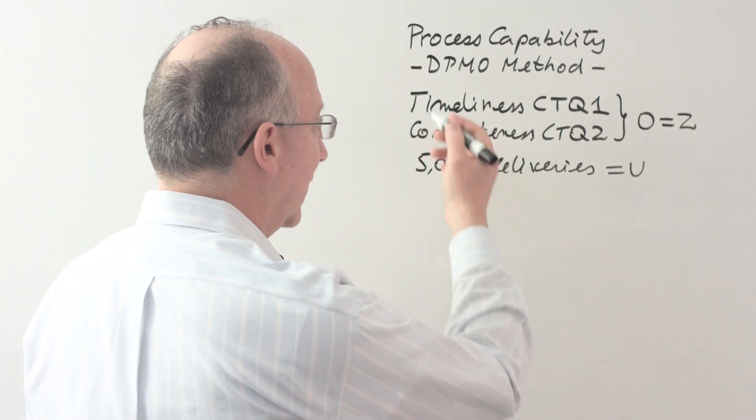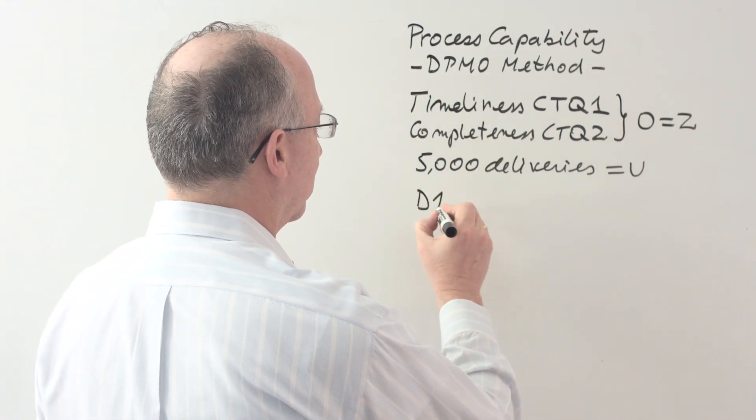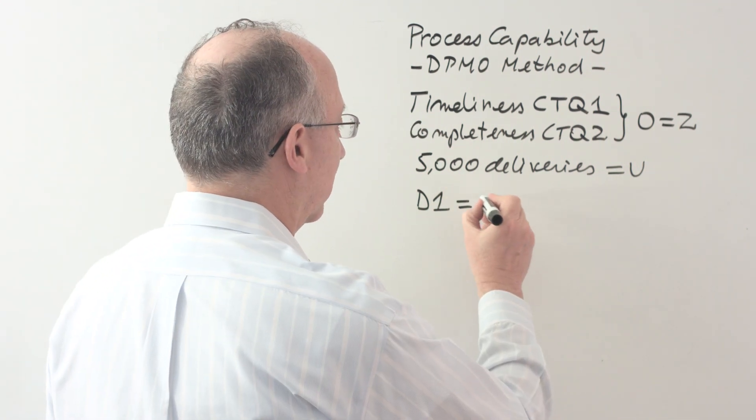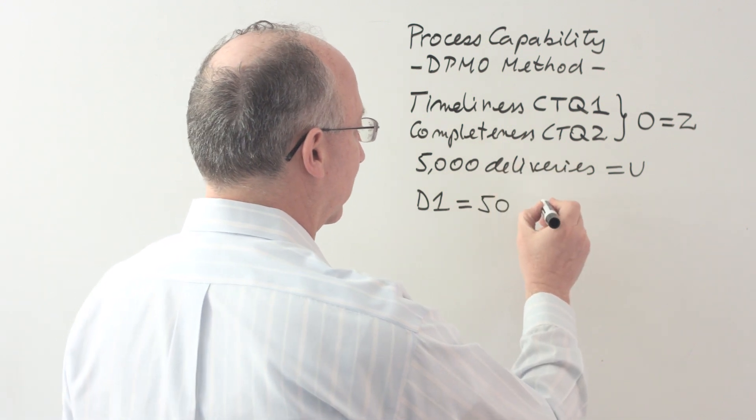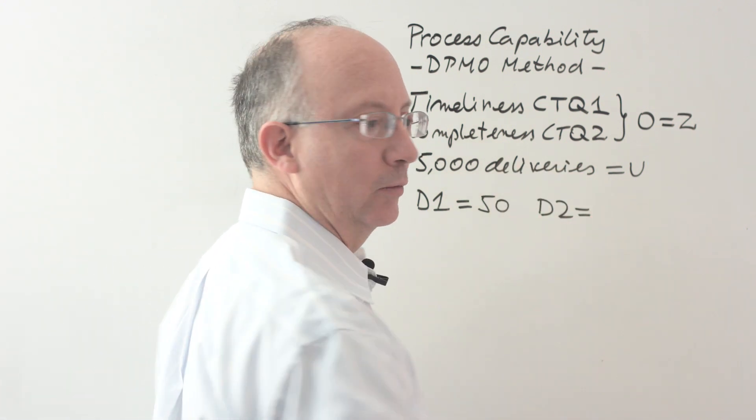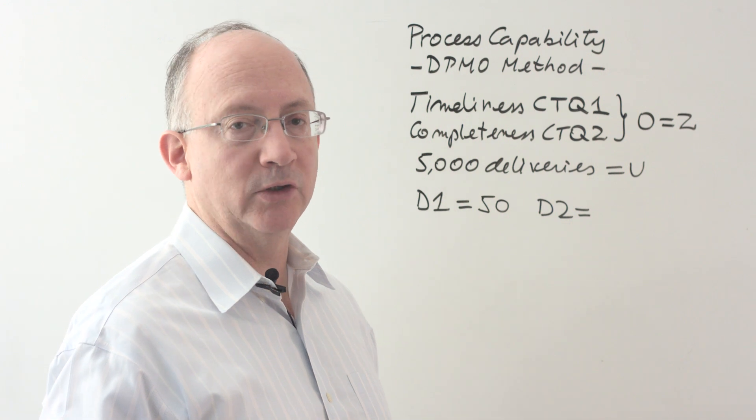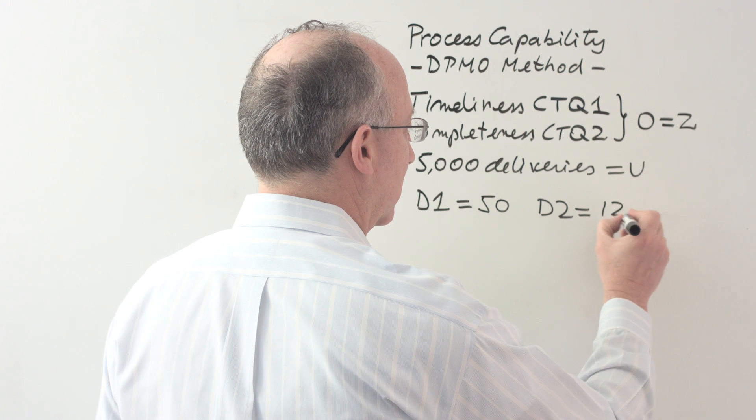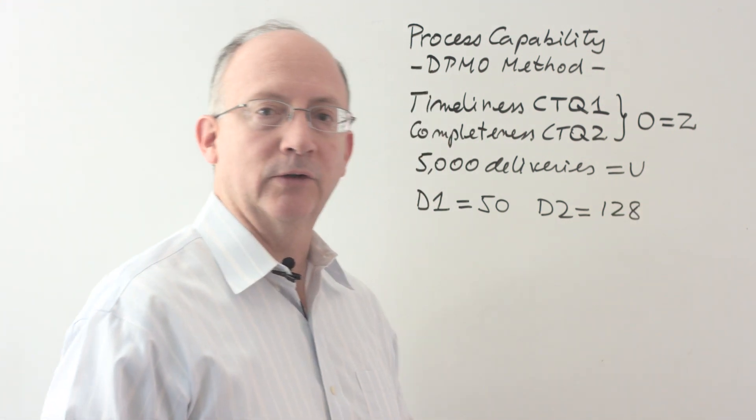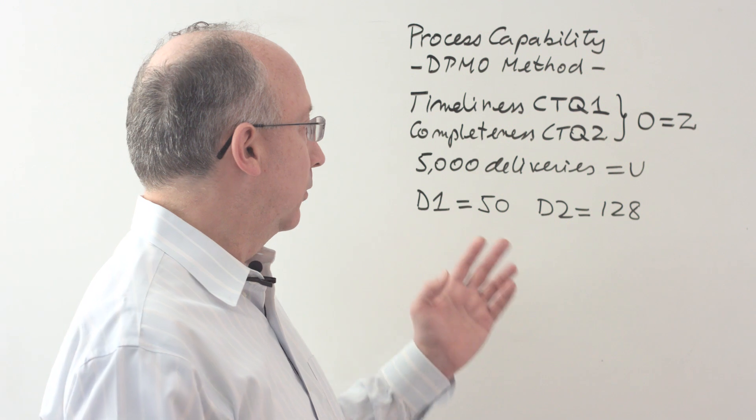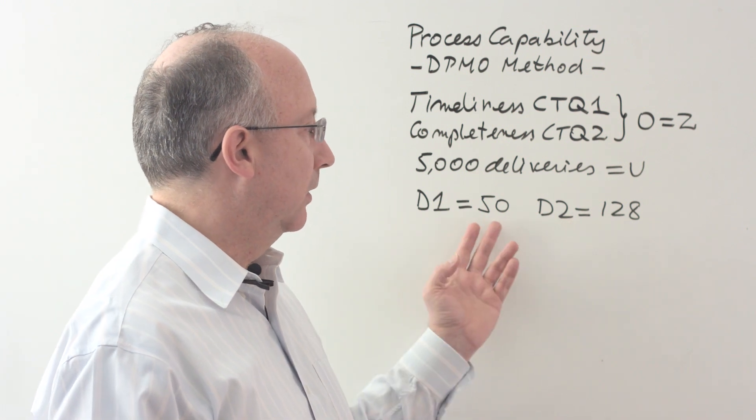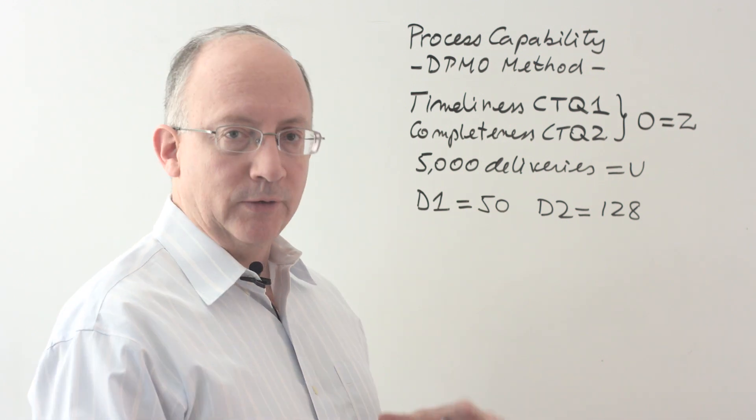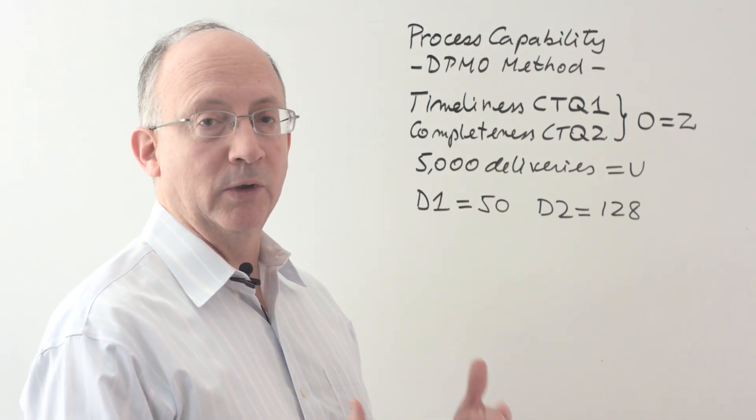Now let's say that we have done this analysis and these are the numbers that we got. The number of late deliveries, which would be defect type 1, we're going to make it equal to 50. And the number of incomplete deliveries, which would be defect type 2, let's say 128. These are numbers that would have come from the survey or baselining exercise that we are conducting. With this number of defects measured, what is the DPMO of this whole operation, and therefore, what's the sigma and what is the yield?